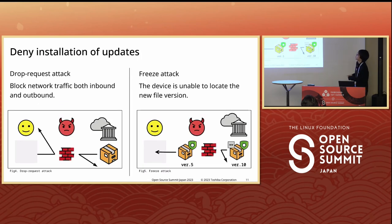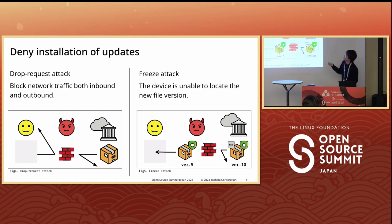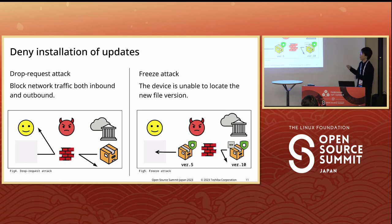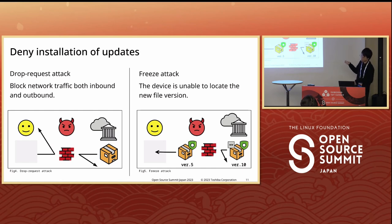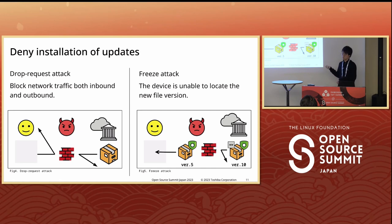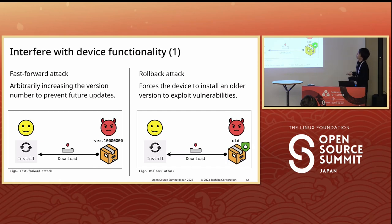Now let's look at actual attacks. First is attacks relating to updates. There are two types here. First is the drop request attack — block network traffic both inbound and outbound, preventing the device from detecting the existence of an update or even the presence of attackers. Next is the freeze attack, similar to the drop request attack, but by continuously serving old images, the device is unable to locate a new file version. These methods effectively obstruct the update process.